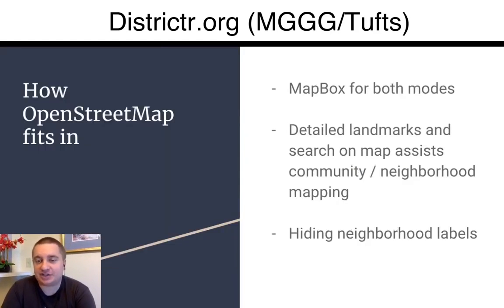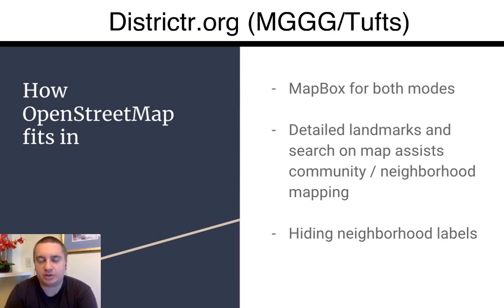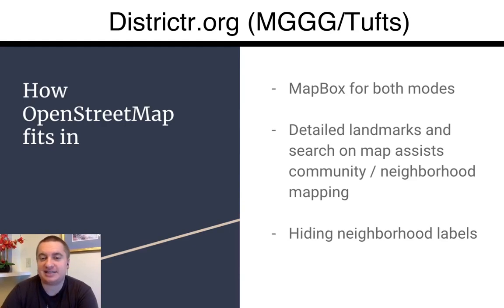OpenStreetMap is a big part of this because we have the Mapbox base map for both of these options. In communities of interest mode, people often say, can you draw from this school to this shopping mall to this road? So we zoom in and we have all those labels there from OpenStreetMap. In fact, we've started hiding some labels on OpenStreetMap because we want people to choose their own locations for neighborhoods.